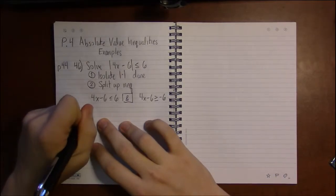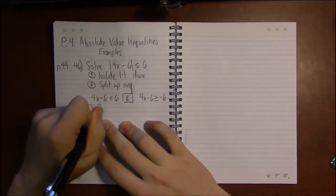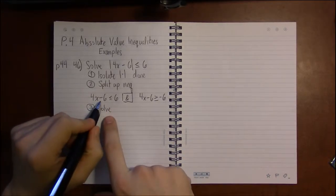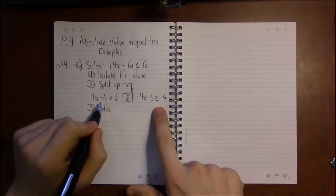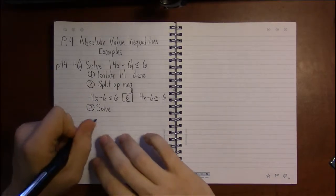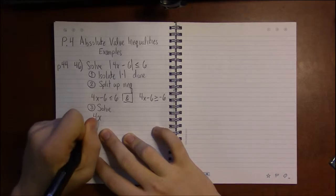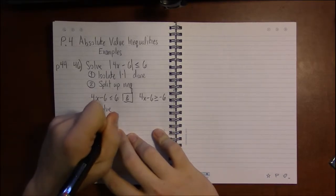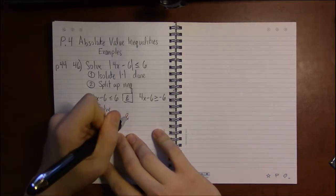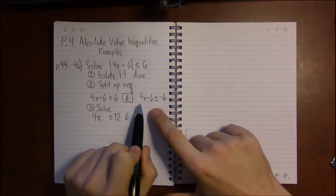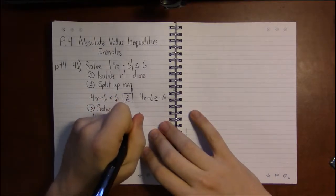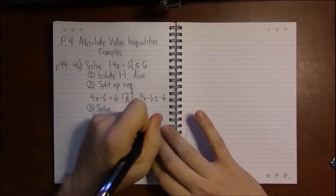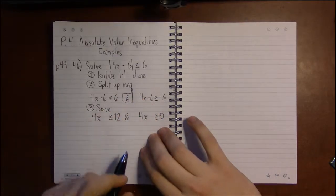Now we solve as usual. We're going to be adding 6 to both sides in both equations. In the first equation, we get 4x is less than or equal to 12. And over here, adding 6 to both sides in the second equation leaves me with 4x is greater than or equal to 0.